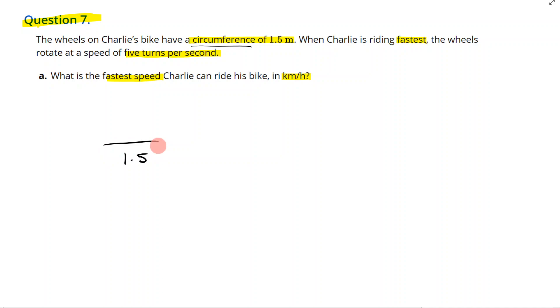Now what we're told is that when Charlie is riding the fastest, the wheels rotate at a speed of five turns per second. So this right here represents the distance he travels in one rotation. So in one rotation of the wheels we go 1.5 meters.